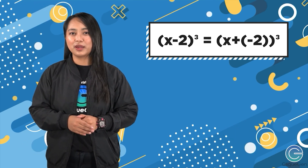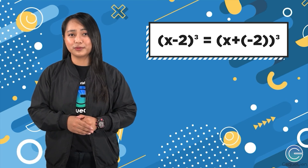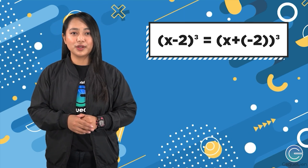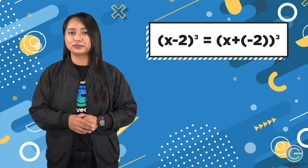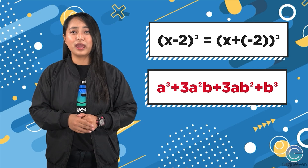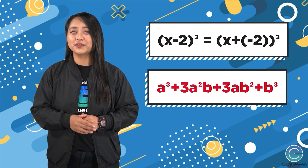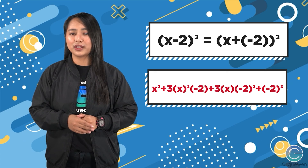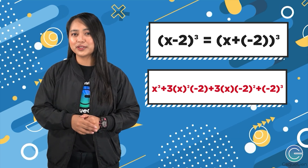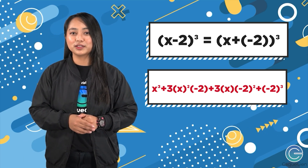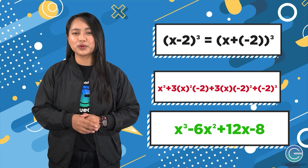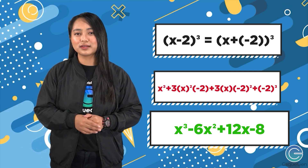Our next example is the cube of x minus 2, which is the same as the cube of x plus negative 2. Our a term is x and our b term is negative 2. Substituting into the second formula — a cubed plus 3a squared b plus 3ab squared plus b cubed — gives us x cubed plus 3 times x squared times negative 2 plus 3 times x times negative 2 squared plus negative 2 cubed. Simplifying, that is x cubed minus 6x squared plus 12x minus 8.